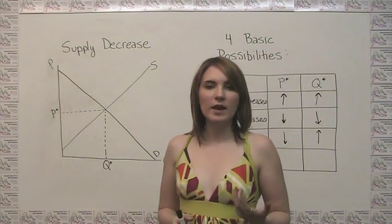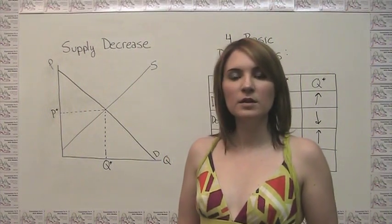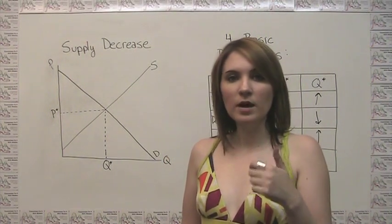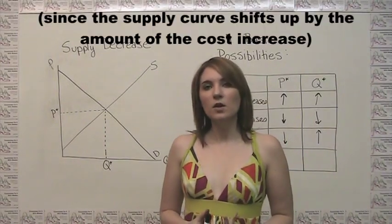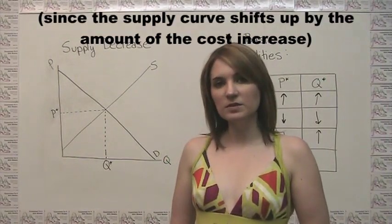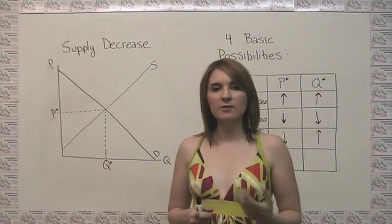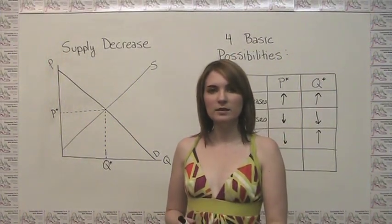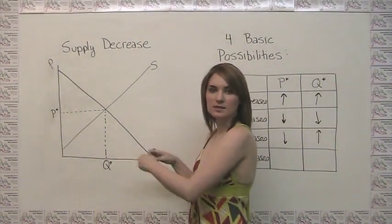Now we said before that input costs are, in fact, a determinant of supply. And when the input costs go up, we get a decrease in supply. So the way we can think about this in terms of comparative statics is the increase in the minimum wage affects a determinant of supply, and it affects that determinant of supply such that we get a decrease in supply.